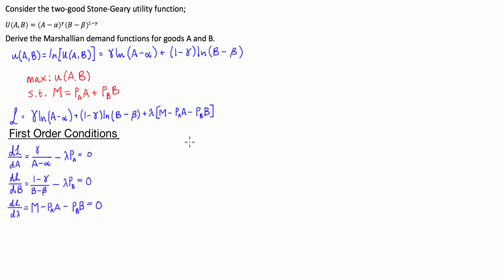Using a fair bit of algebra, we can use the first two first-order conditions to eliminate the Lagrangian multiplier and find both A and B in terms of their allocation gamma, their prices P_A and P_B, and their subsistence consumption alpha and beta. To start with, I'm going to rearrange both partial derivatives with respect to A and B so we have the Lagrangian multiplier times the price of A on the right-hand side, and the Lagrangian multiplier times the price of B on the right-hand side of each equation.